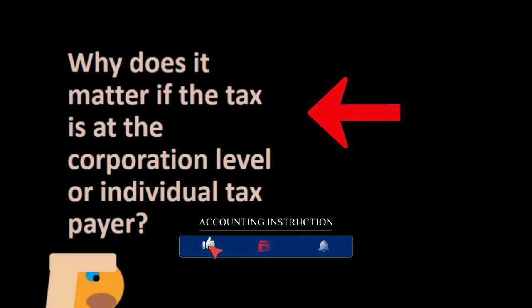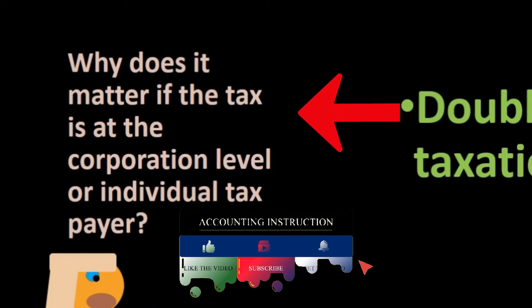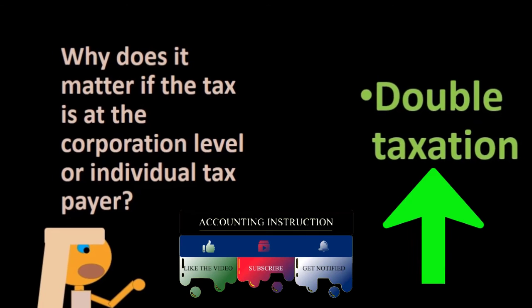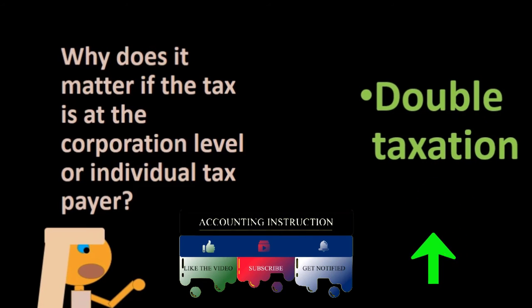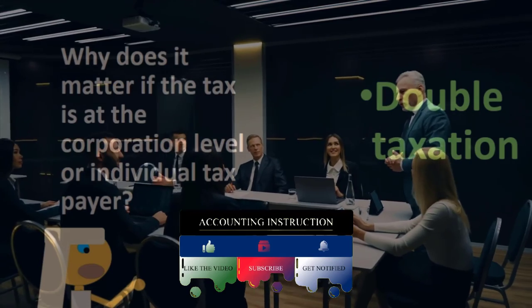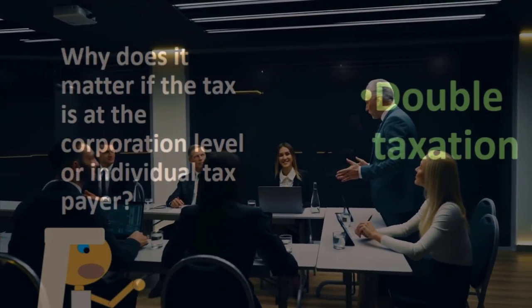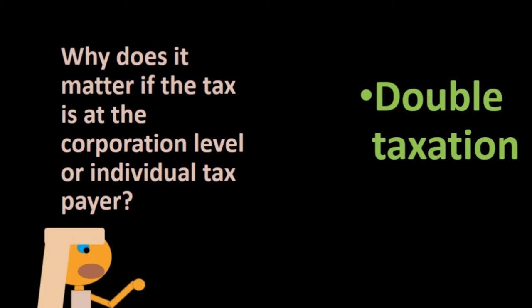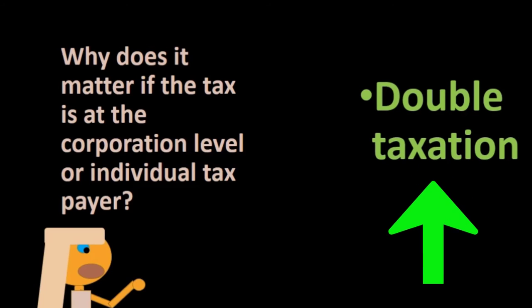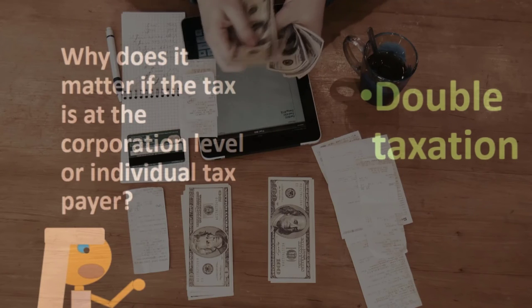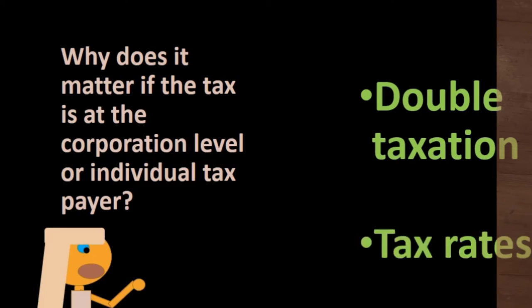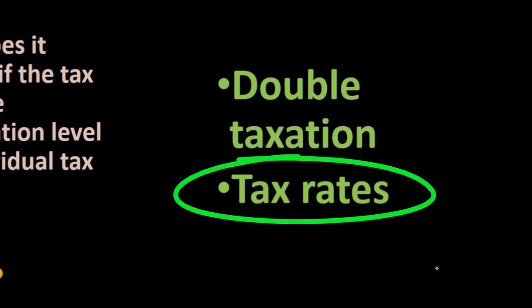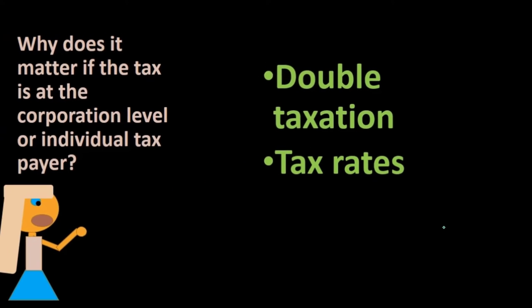Why does it matter if the tax is at the corporate level or the individual level? The main reason is double taxation. If we tax it at the corporate level, dividends are also taxed — individuals cannot draw out money as they can in a partnership or sole proprietorship. The dividends, being the form of draws for a normal corporation, are a taxable event. So income is taxed at the corporate level, and when distributed to owners, it's taxed again at the individual level. Tax rates may also differ between the corporate and individual levels.